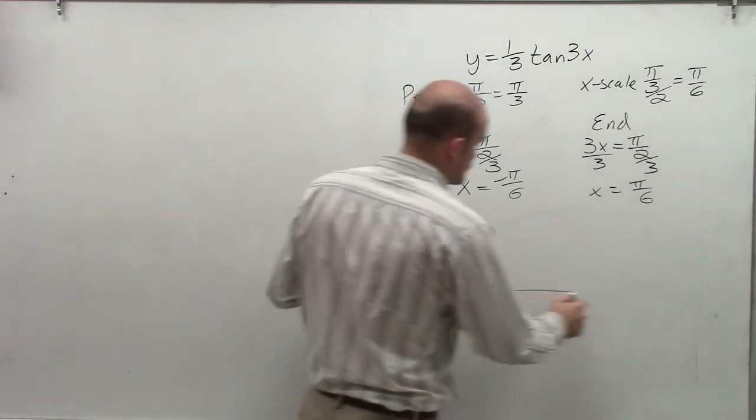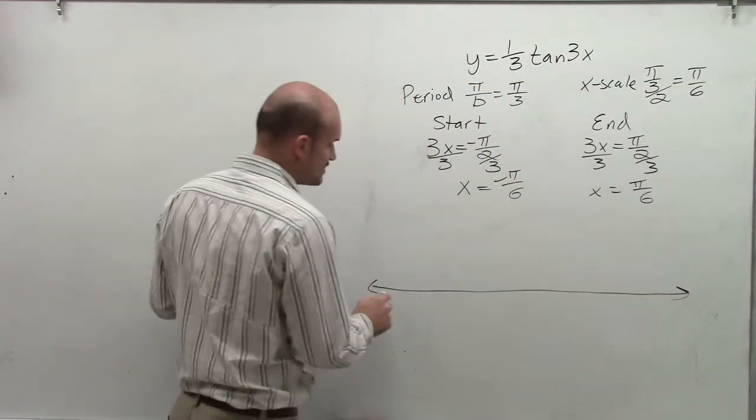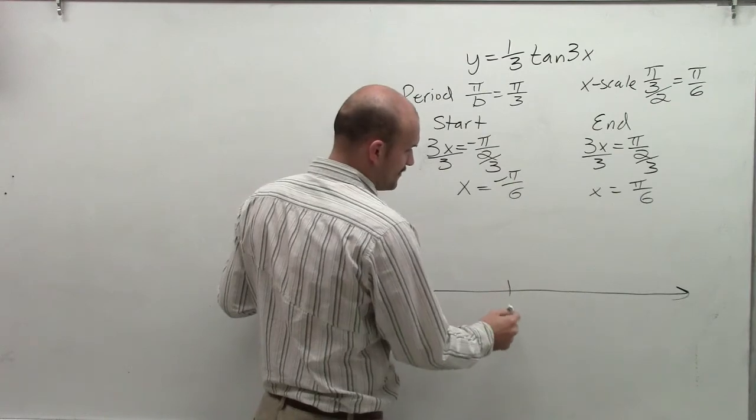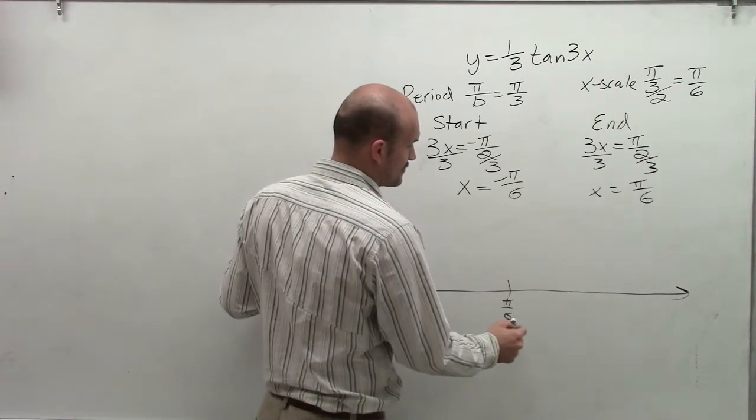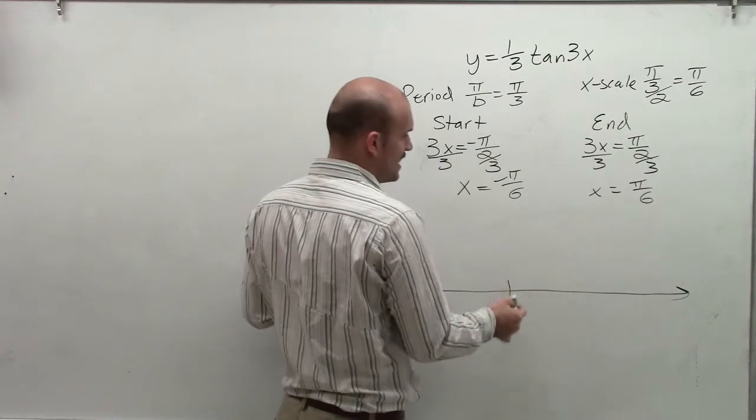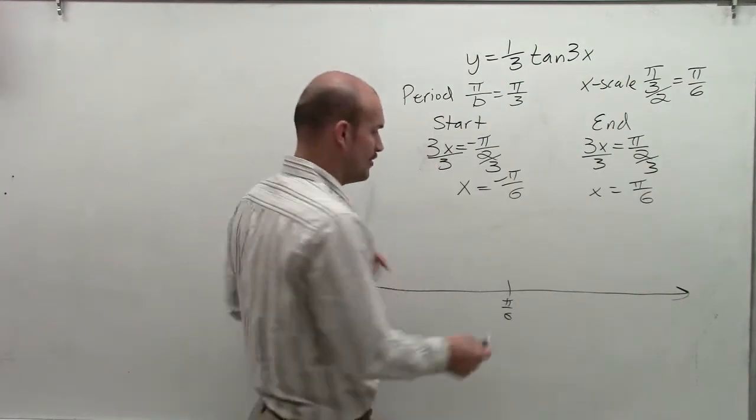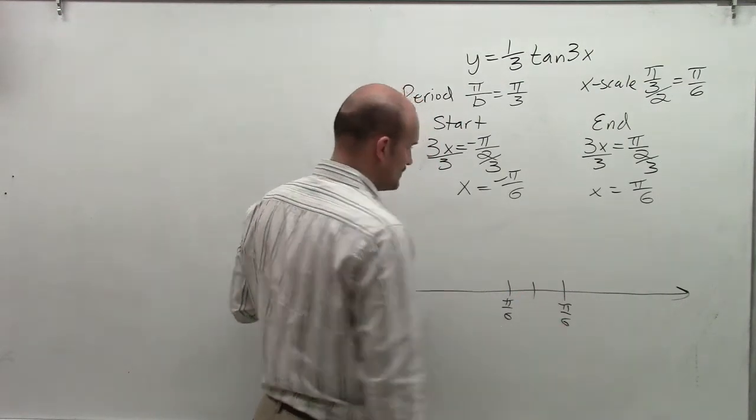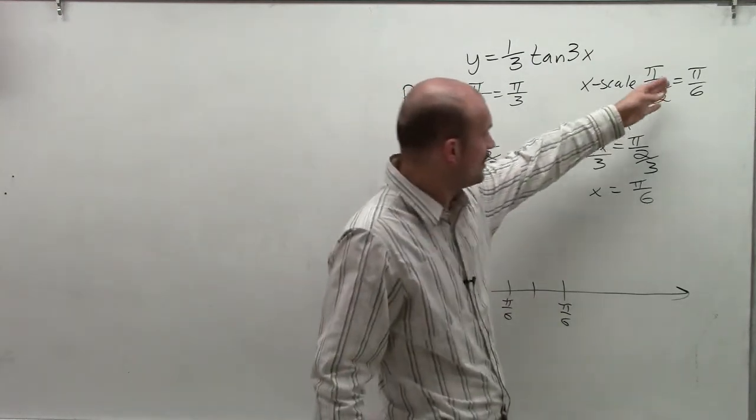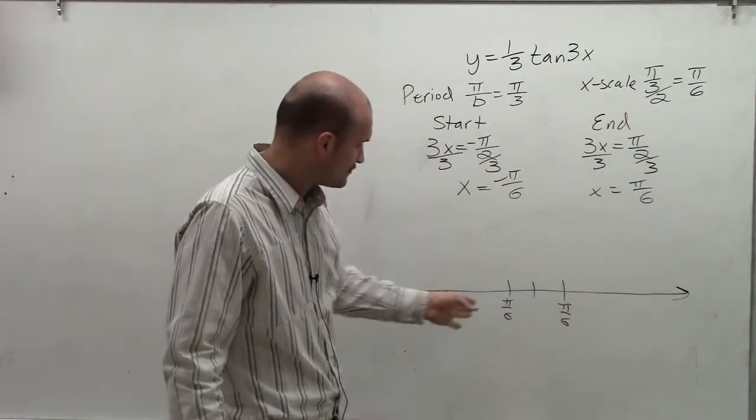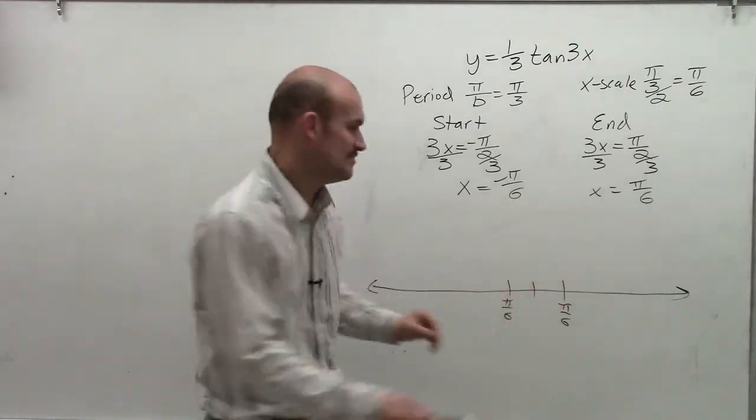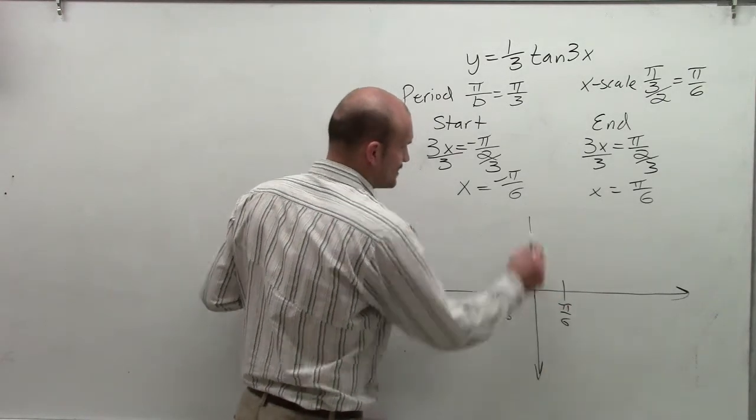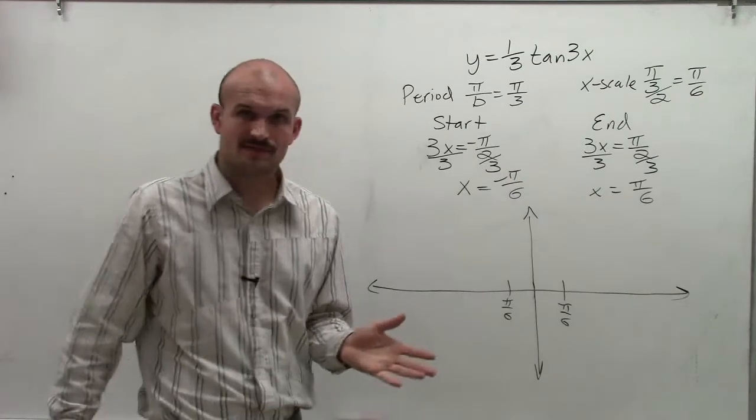So in graphing the tangent function, the first thing I want to do is create my x-axis, and I'm going to start at negative pi over 6. We know that it's going to end at pi over 6, and there's two important points. So I'm going to have a point here, and then it's going to end at pi over 6. Since my x scale is also pi over 6, I can show that my next middle point is going to be the y-axis, or when x equals 0.